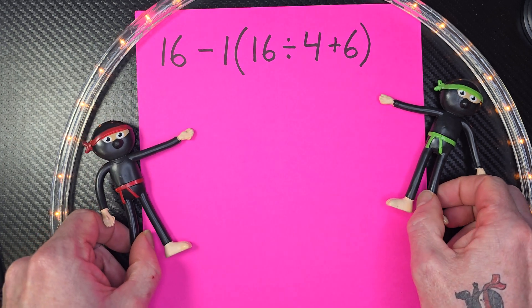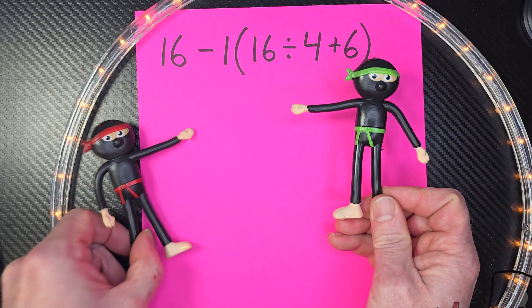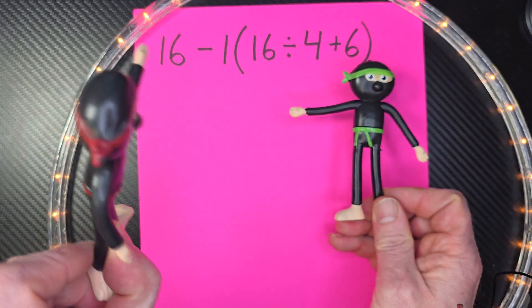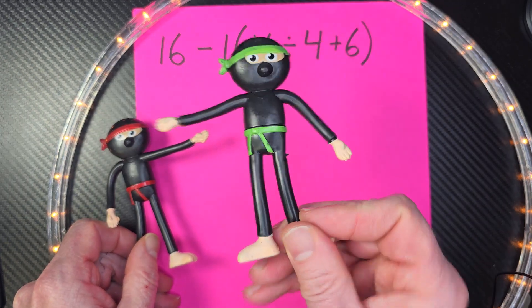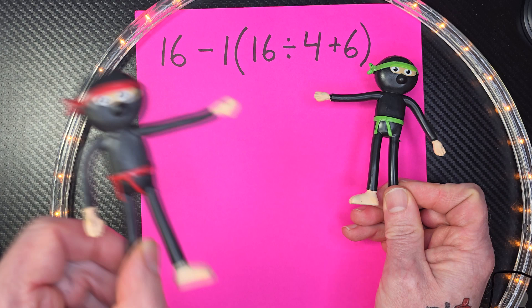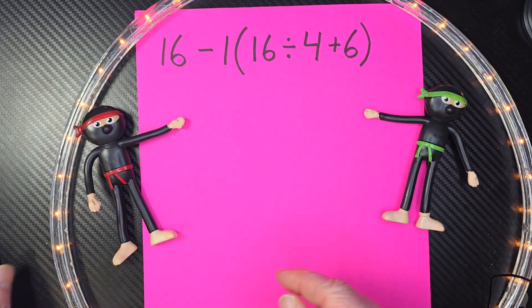All right, my math ninjas, what do we do first? You do what's inside parentheses first. Then what is our second step? Exponents. You see any exponents? No, not today. And then what's our next step? Multiplication and division from left to right. And then our last step? Addition and subtraction from left to right. All right, math ninjas, let's go ahead and begin.